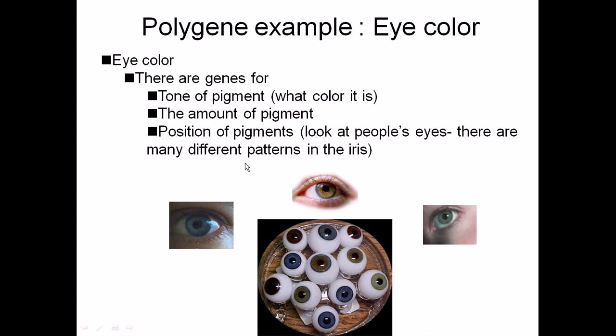You can see many varieties in different types of eye color, and these varieties are not controlled by one gene—they are controlled by many different types of genes. As you can see here, at least three different genes control this. These are the examples of polygenic inheritance.